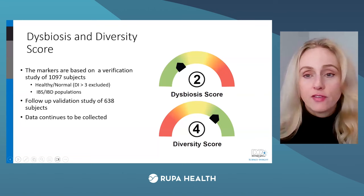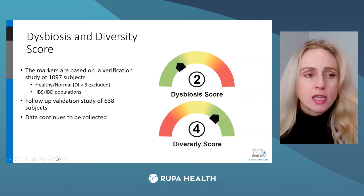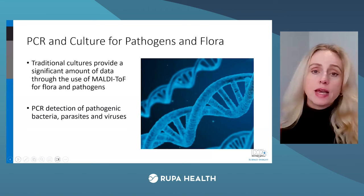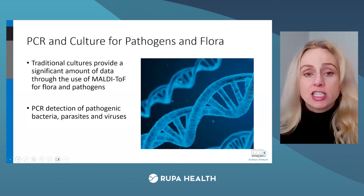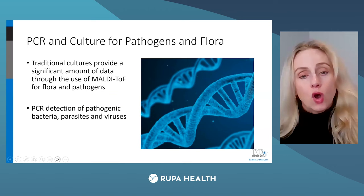Everything is available to you. If you put information about microbiome diversity into PubMed, I believe there are 14,000 papers right now. That's the first section of GI 360 — that's PCR, looking at the bacteria in a profile associated with health and specifically those conditions. The next piece we're going to talk about is culture.